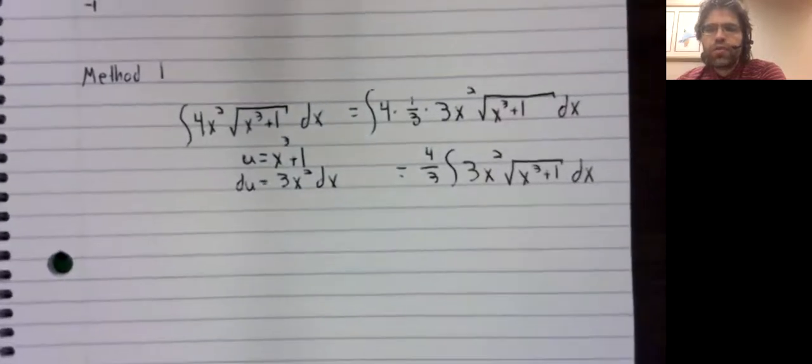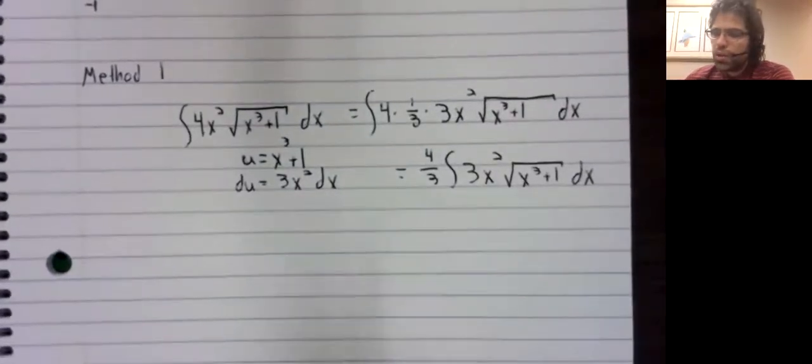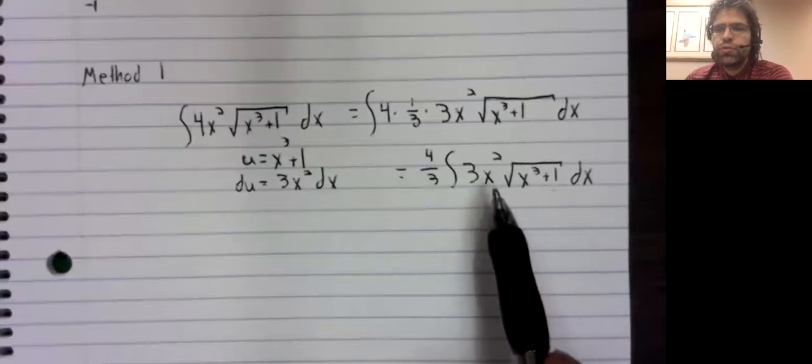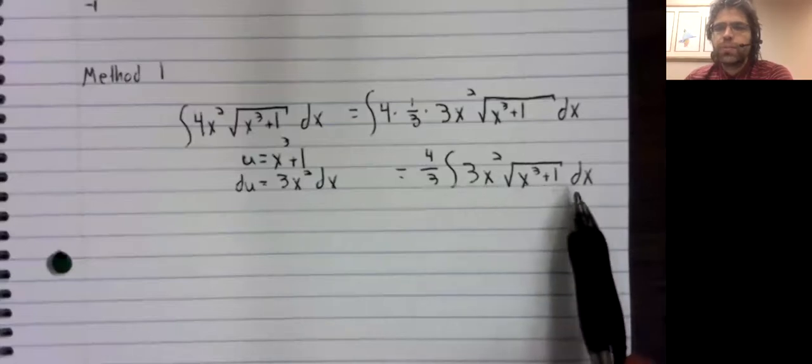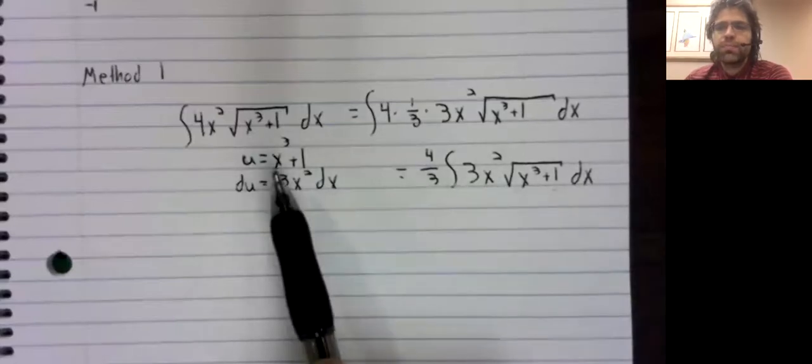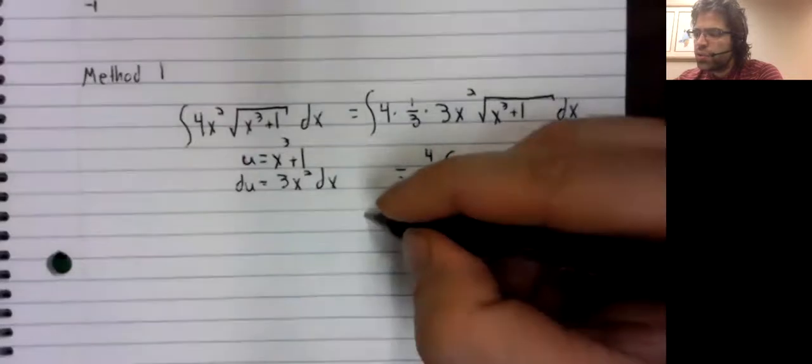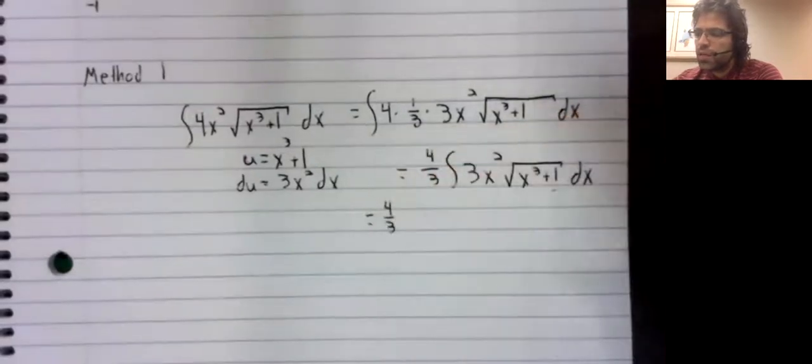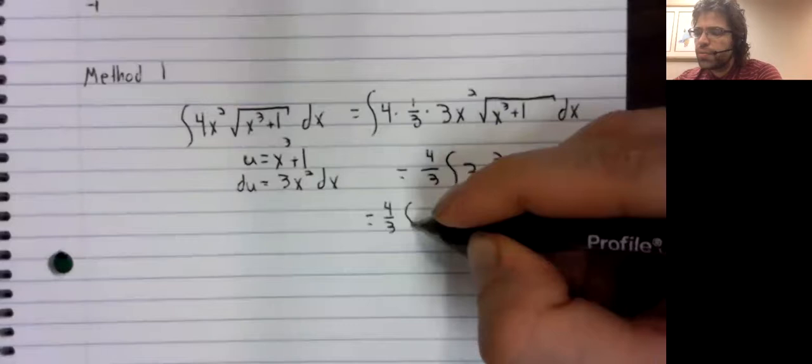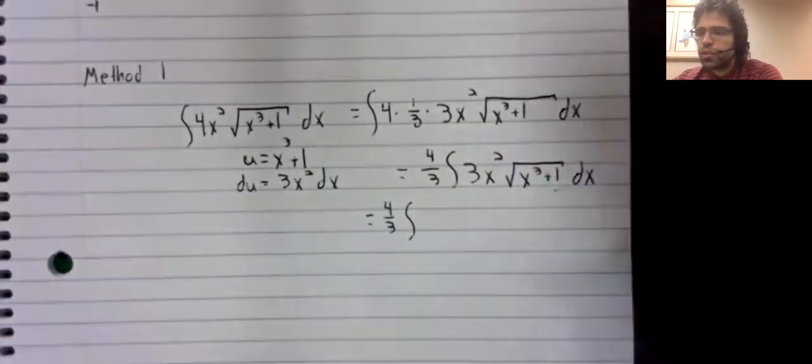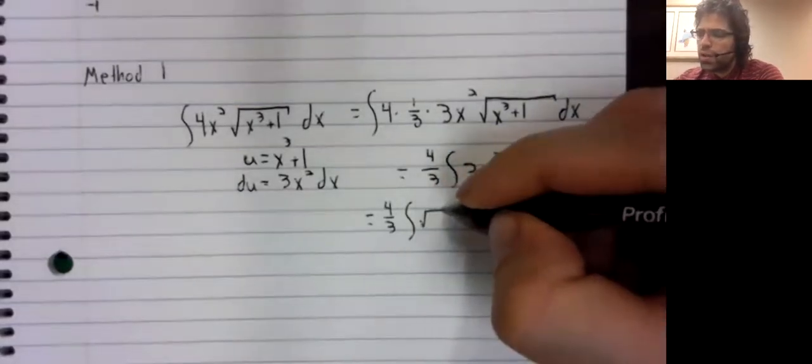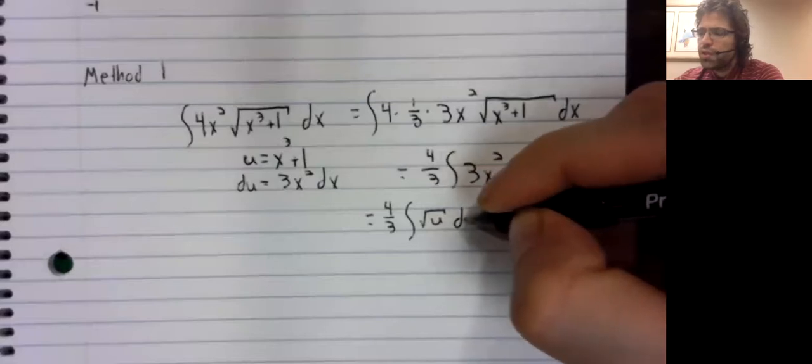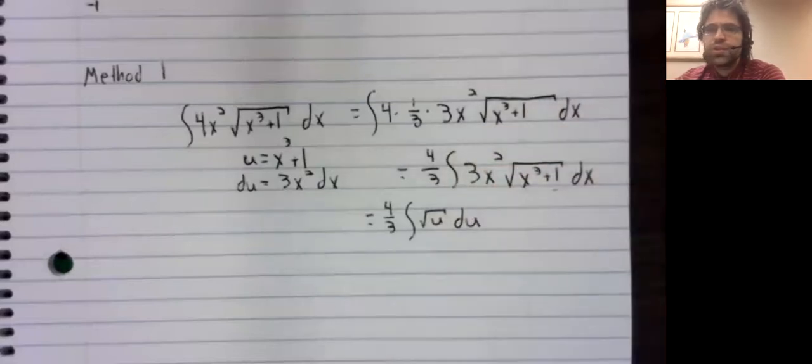And now convert to u. This gives us the square root of u. 3x squared dx gives us du. Four thirds times the integral of the square root of u, du.